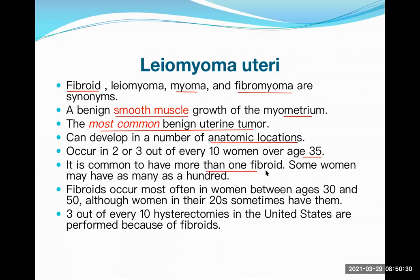It is common to have more than one fibroid. Some case reports have documented as many as 100 fibroids, but usually there is one or sometimes more than one. Some fibroids are right at the center of the muscle wall and grow either inwards or outwards. Some lie predominantly outwards just below the serosal surface, and some lie just below the mucosa.